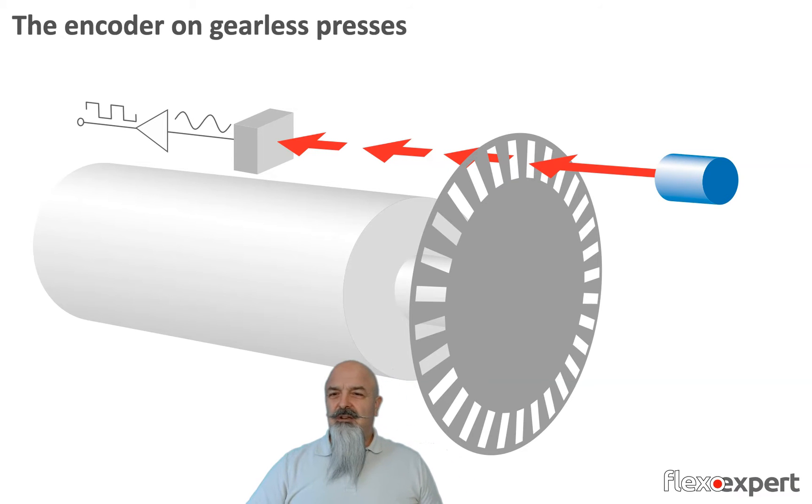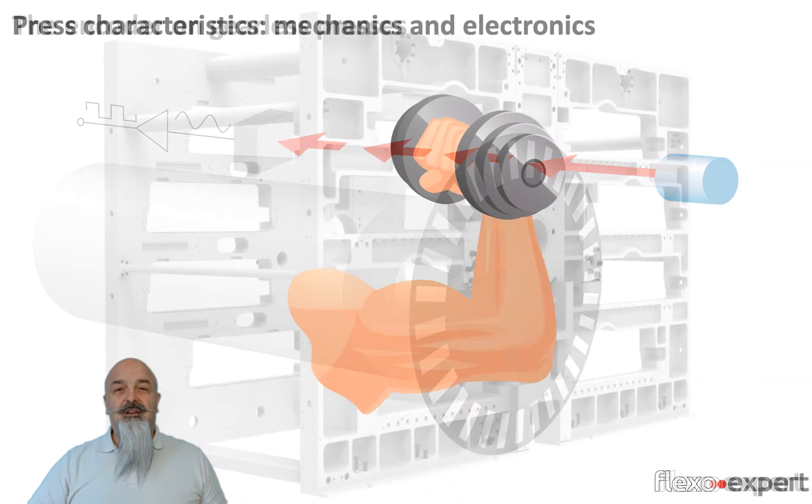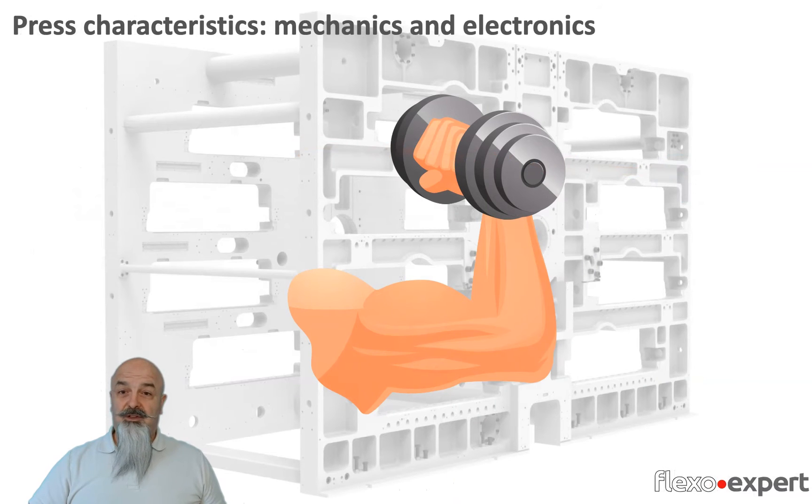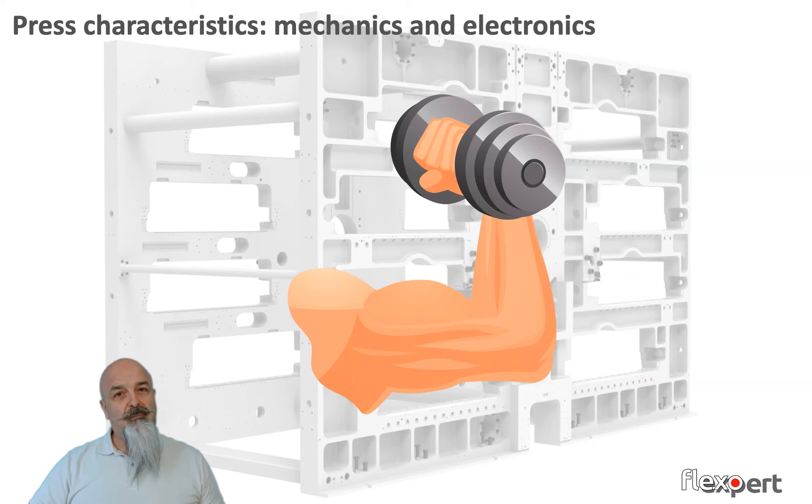But you know, it's not just about electronics. The mechanical structure of the press is extremely important. The thickness of the shoulders is one of the most important aspects to guarantee good stability in your printing press. But also the control of the temperature that can subtly change the size of metallic components. The use of carbon fiber components to absorb vibrations, and many other innovative solutions are in place today to prevent such problems from happening.